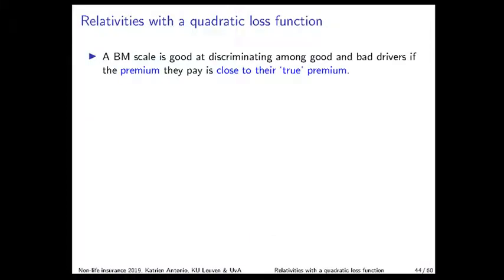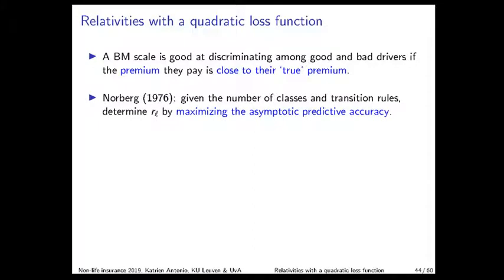Predictive accuracy is a useful measure of the efficiency of a bonus-malus scale. A bonus-malus scale is good at discriminating among good and bad risks if the premium those policyholders pay is close to their true premium. According to Professor Norberg in a 1976 paper, once the number of classes and the transition rules in a scale have been fixed, the optimal relativity RL is determined by maximizing the asymptotic predictive accuracy.